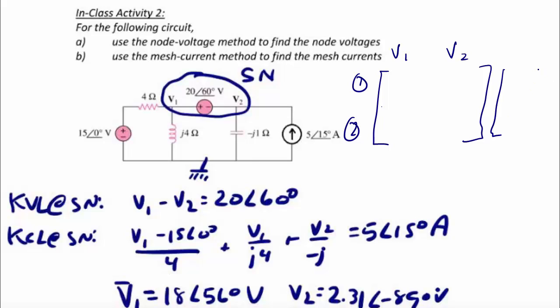So the program asks for A1, and that is the first equation, first coefficient, so that's going to be 1, V1, minus 1, V2, and that equals 20 angle 60 degrees.